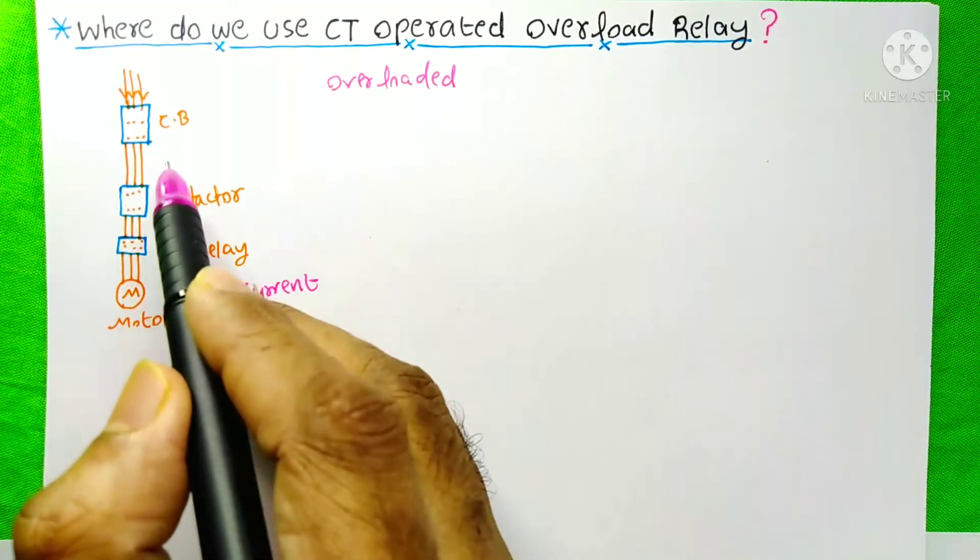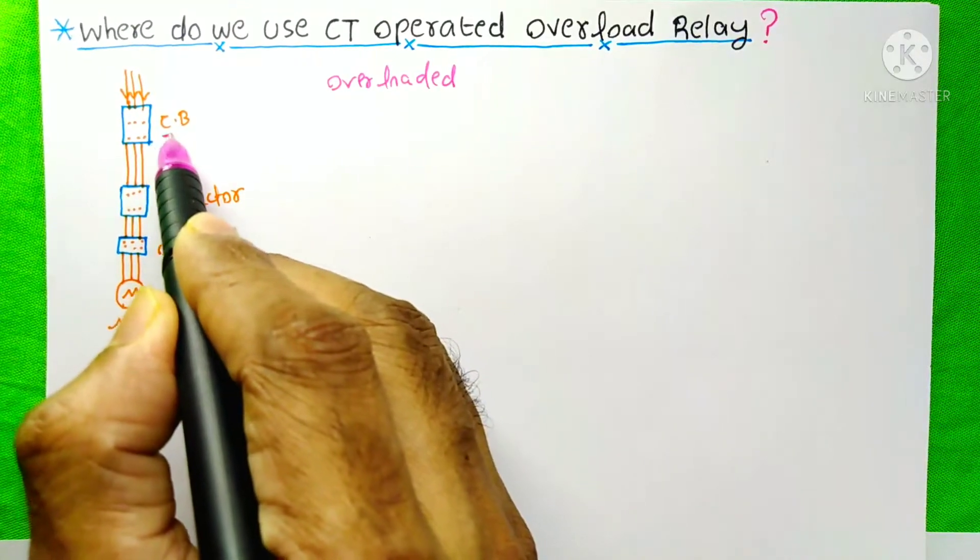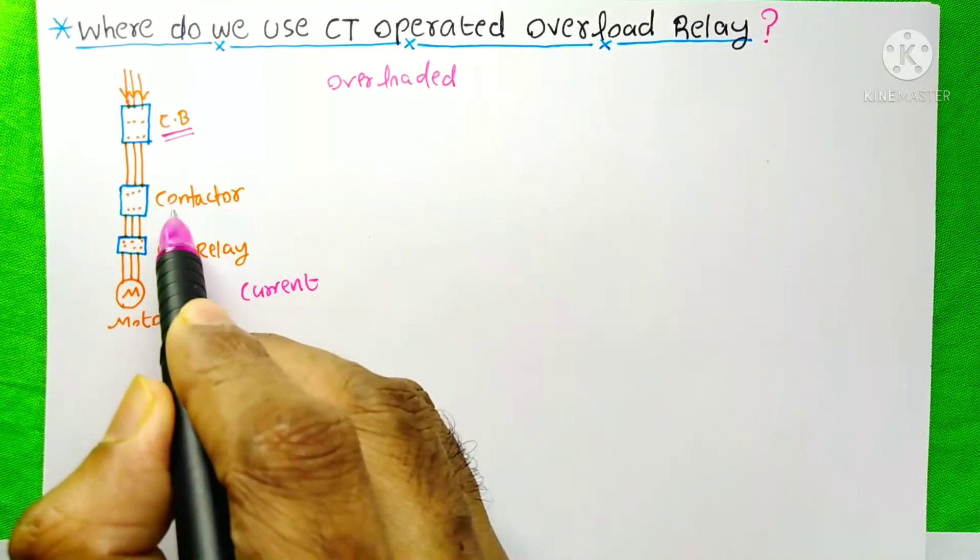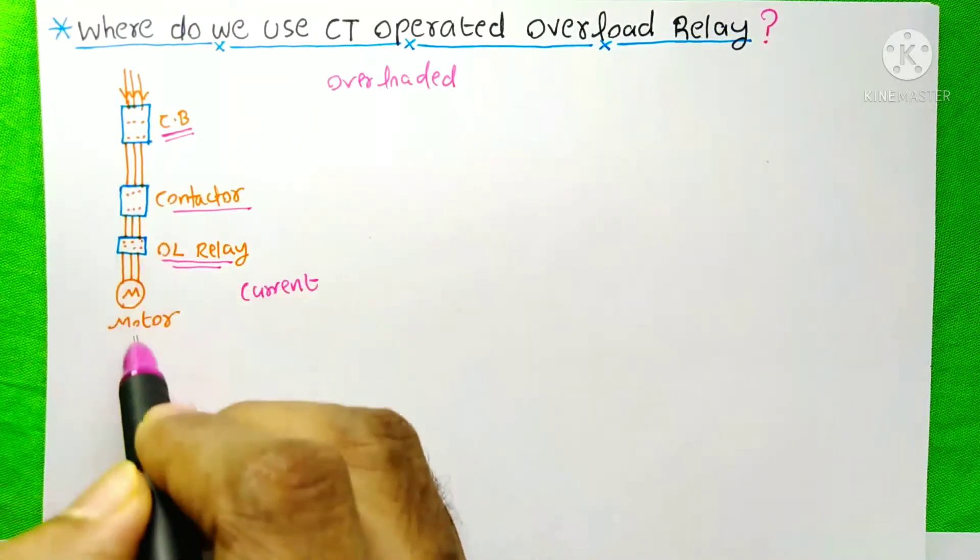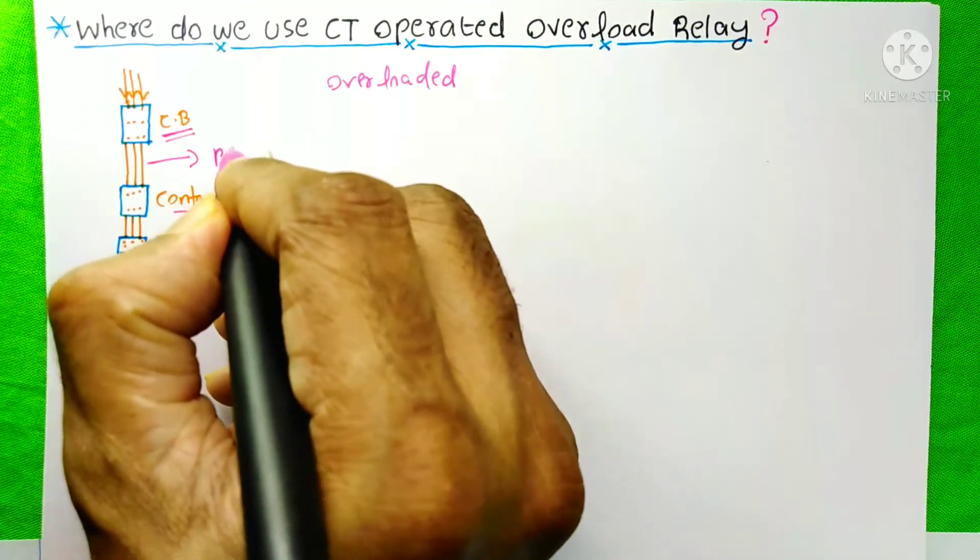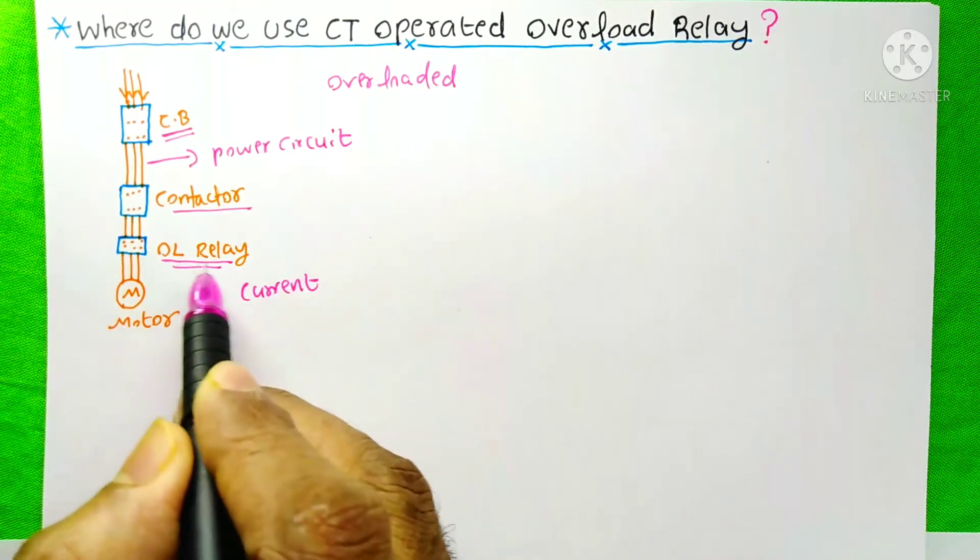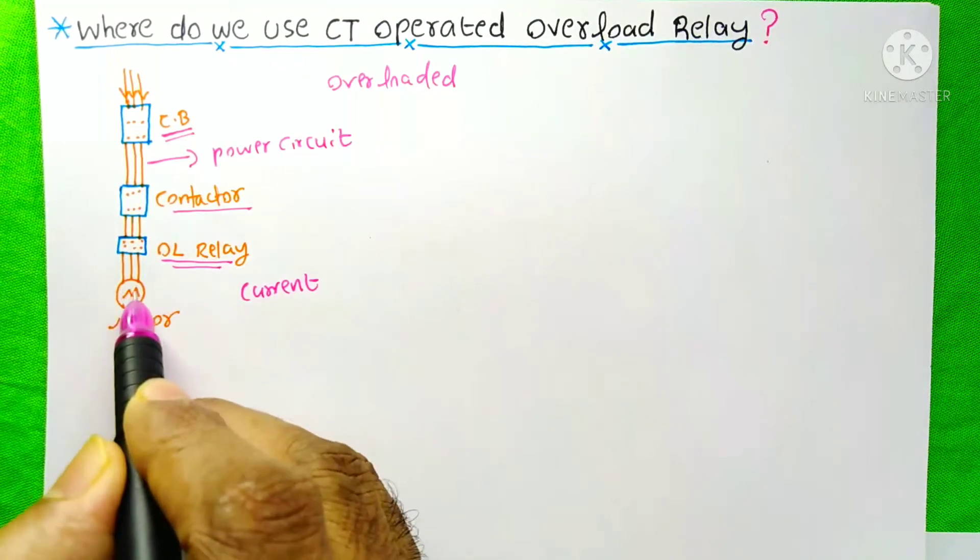Here I have shown a circuit in which there is a circuit breaker and it is the power conductor and it is overload relay. This circuit is actually the power circuit, and we use this overload relay here in the power circuit.